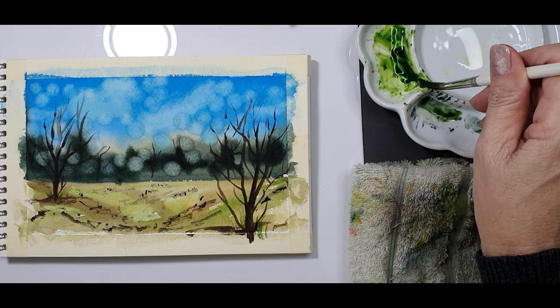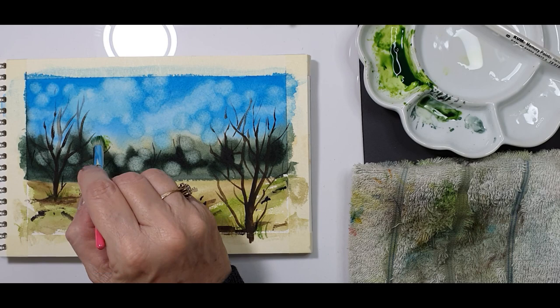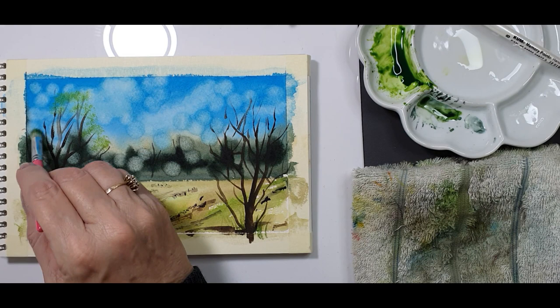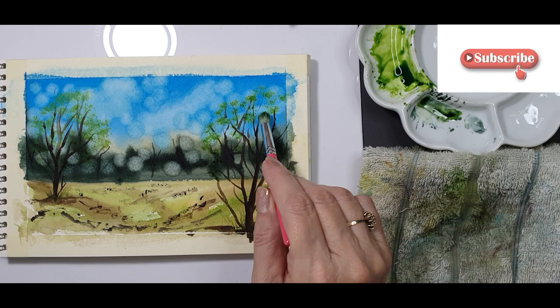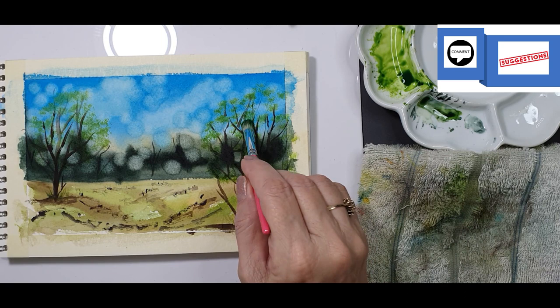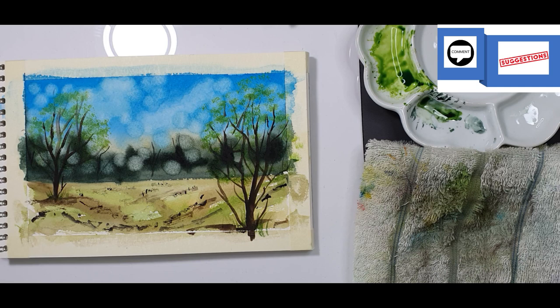I'm mixing up some sap green to start the foliage. You always start with your lightest color. So sap green is my first color and just dab it in with a damp stencil brush, not wet, just damp. You can use the flat side or the sides of the brush. Work very lightly, you don't have to press hard.